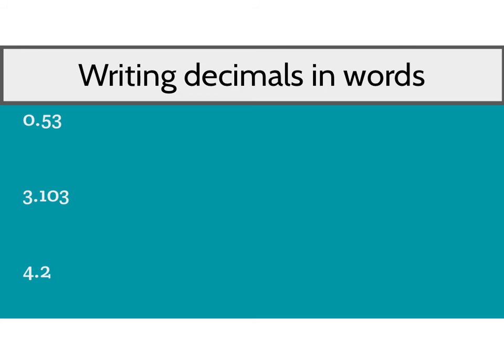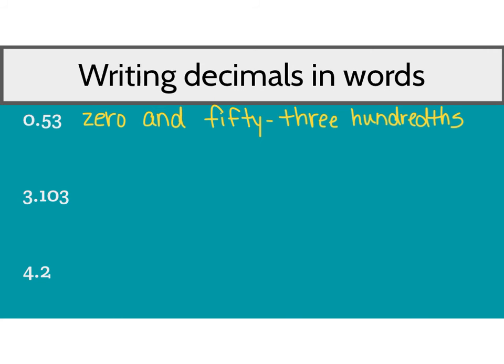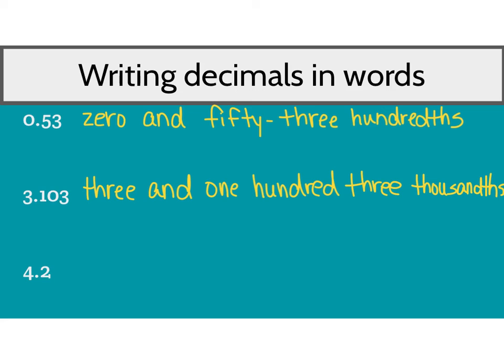Part of this lesson is being able to write decimals in words. We've got three problems here. How would you write that in word form? Our first decimal, when we say it out loud, is zero and fifty-three hundredths — so that's exactly what we're going to write, and it should look just like this. Our second decimal: three and one hundred three thousandths. You're going to write it just like you say it — three and one hundred three thousandths.